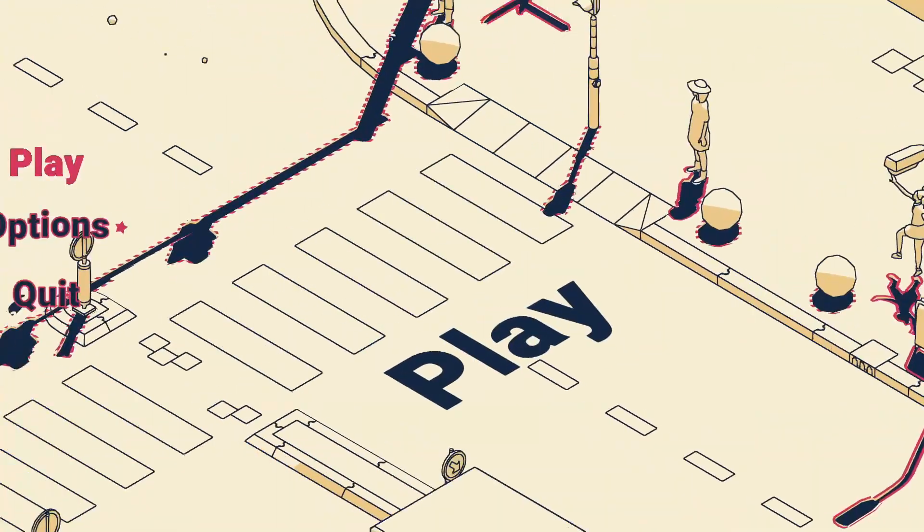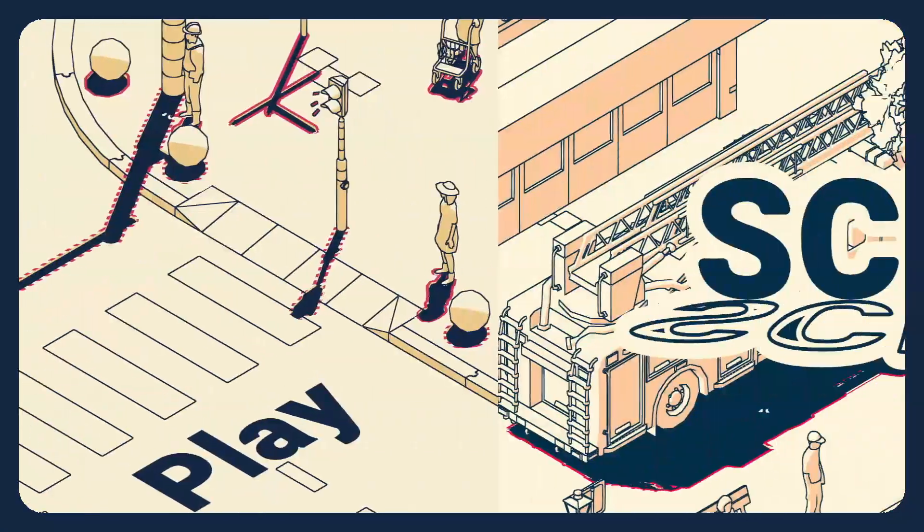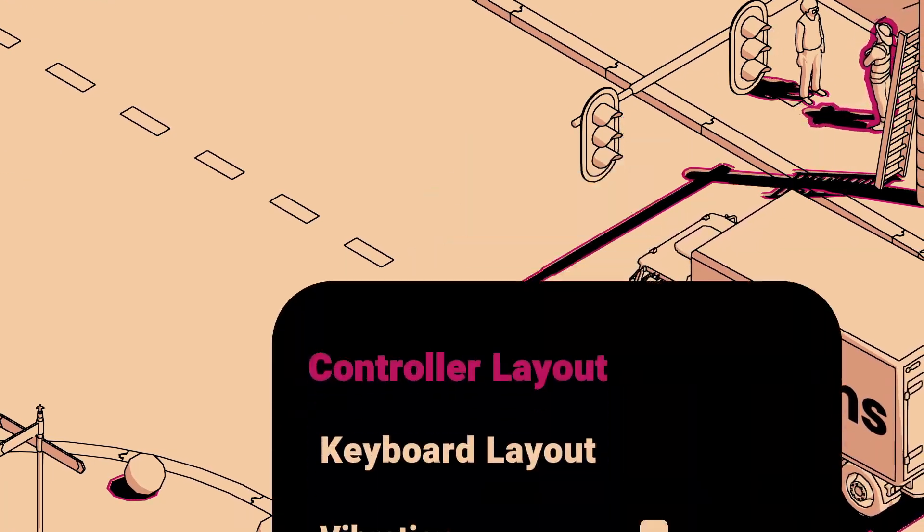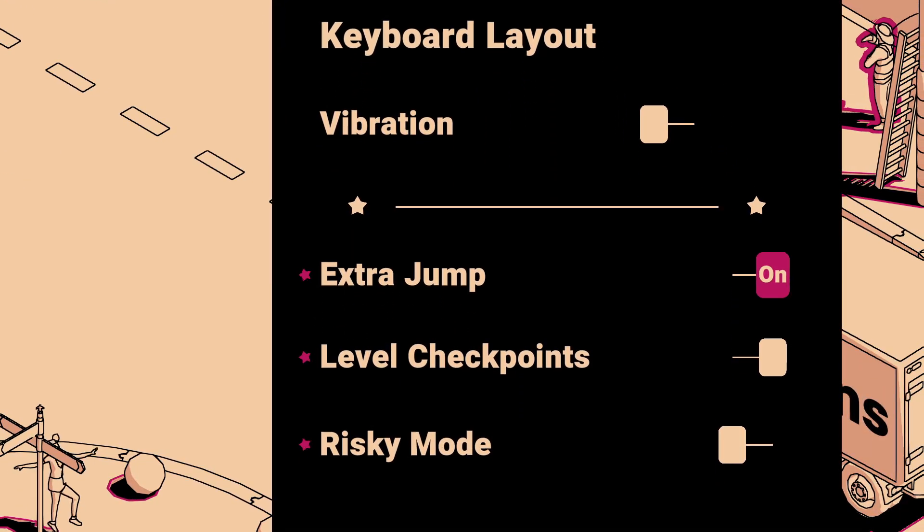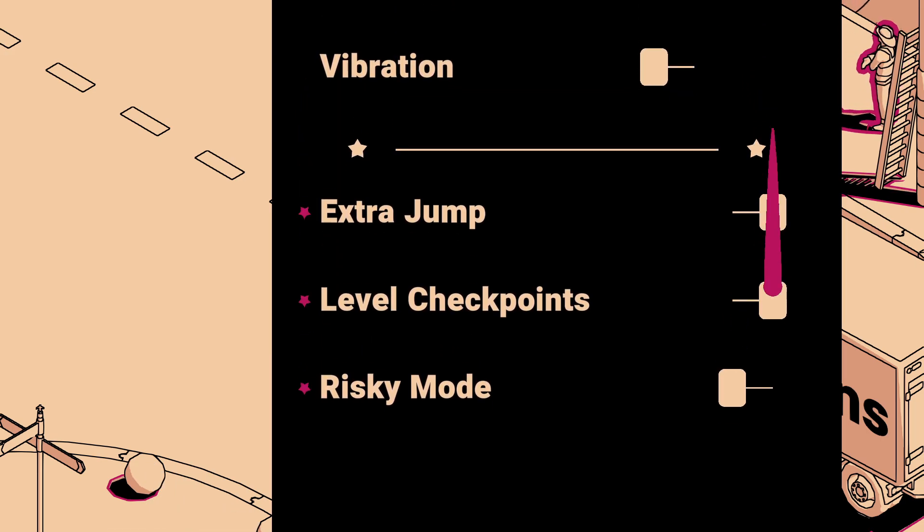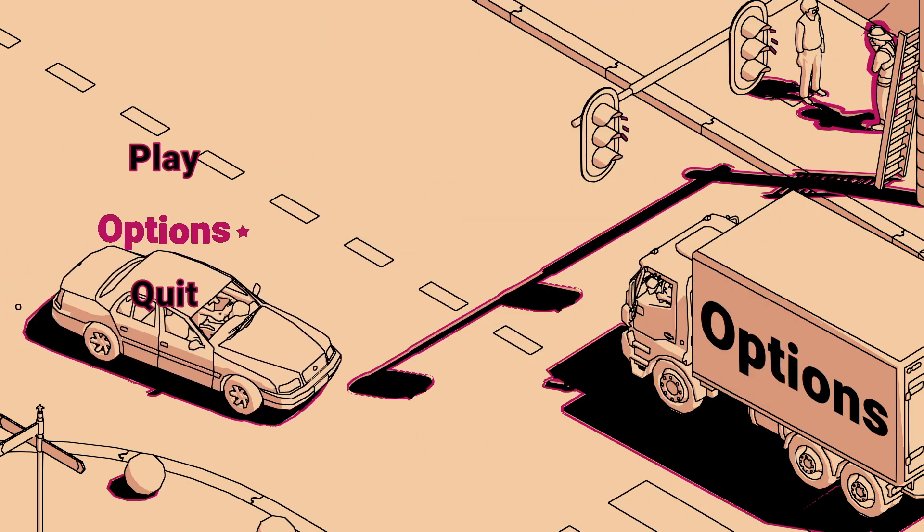I guess that wraps it up. Oh, wait. Is there something new in options? Oh, what's this? Controls... Oh, okay. I can turn off the extra jump, level checkpoints, and risky mode now. Which I don't think I'm gonna do. I think I'm gonna call it good.